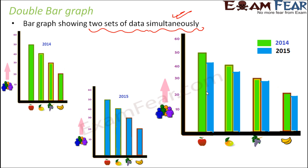This is how a double bar graph looks. Your X and Y axes follow a similar pattern, except that you have two rectangular bars for each fruit — one bar represents 2014 and the other represents 2015. To distinguish between the two bars, they are colored differently. All the green colored bars represent 2014, and all the blue colored bars represent 2015.